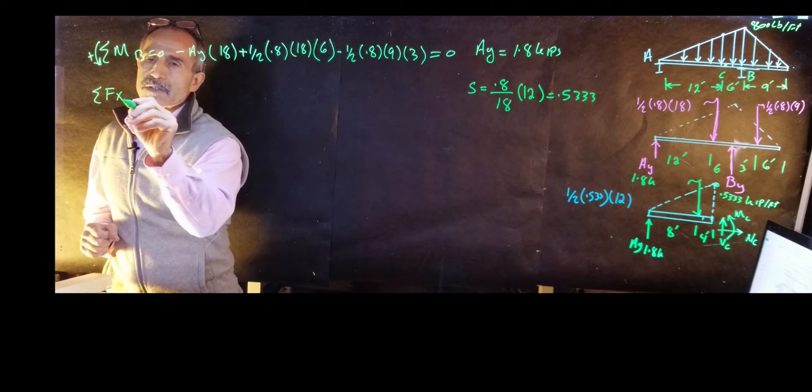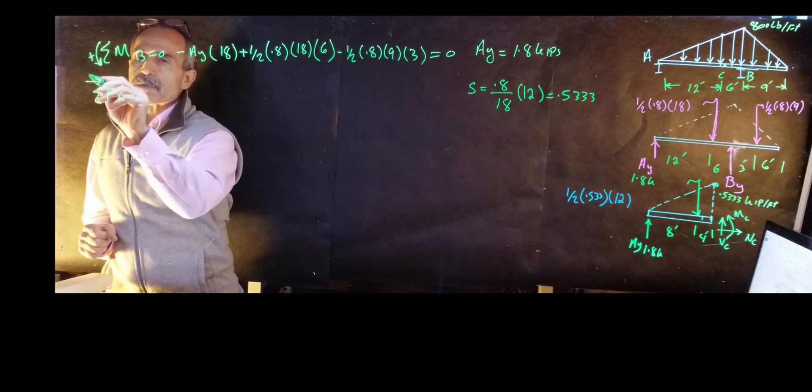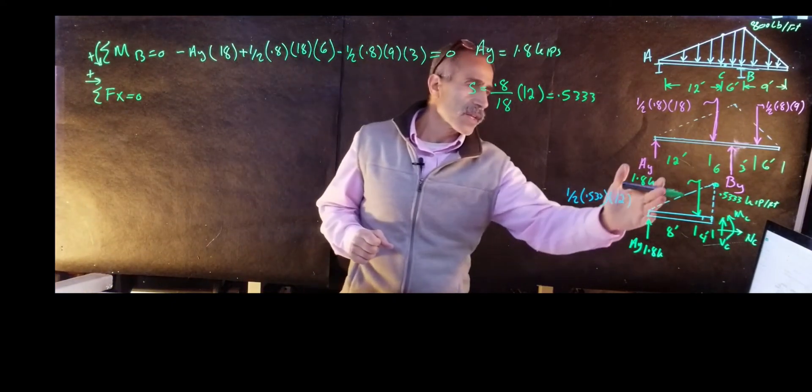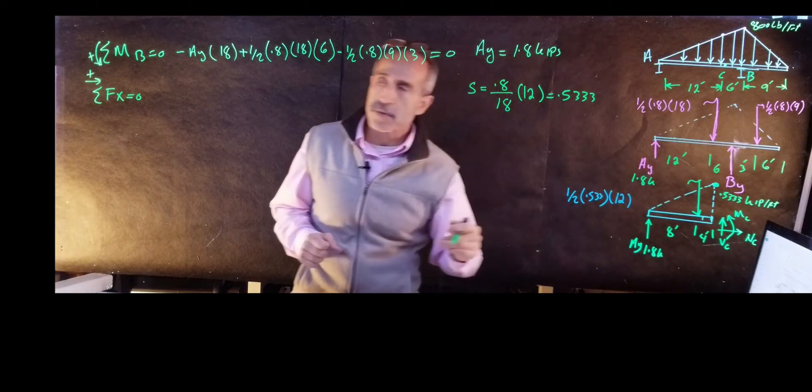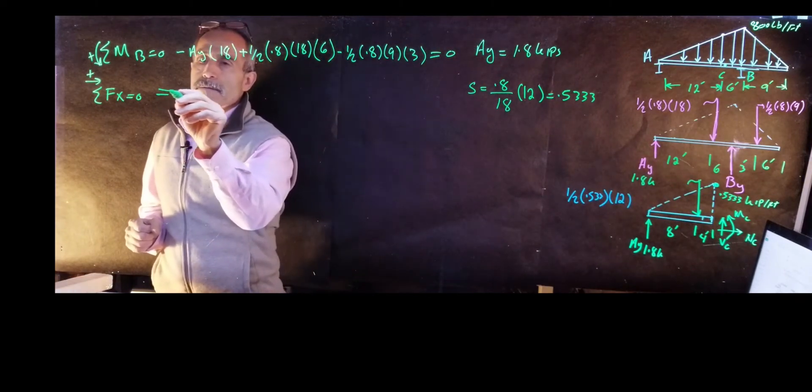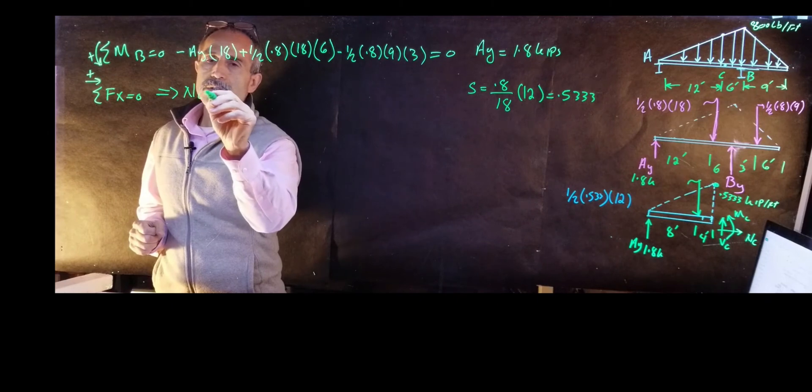Summation Fx first, summation Fx is equal zero, going right is positive. I have nothing here, nothing here, nothing here. So Nc comes out to zero. Nc is equal zero.